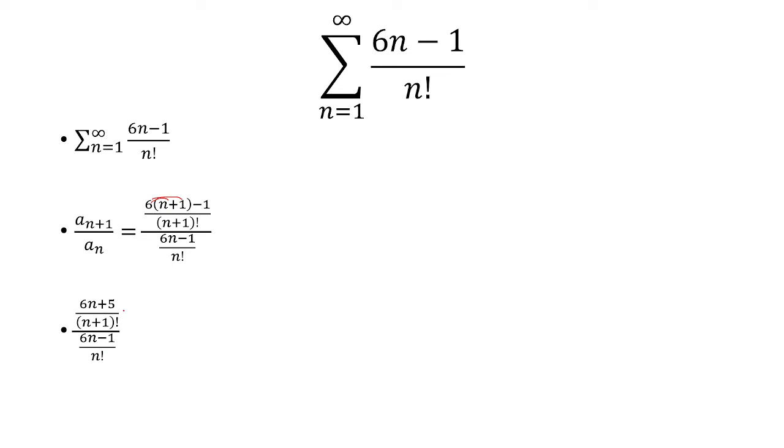So right now I have a fraction at the top divided by a fraction at the bottom. That's going to be the same thing as multiplying by the reciprocal of the bottom fraction, which will be n factorial over 6n minus 1.